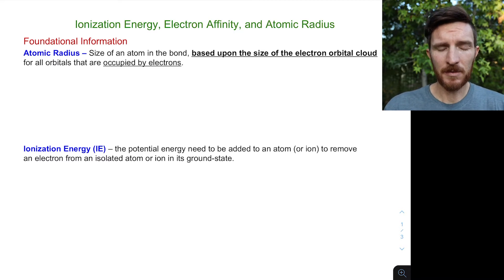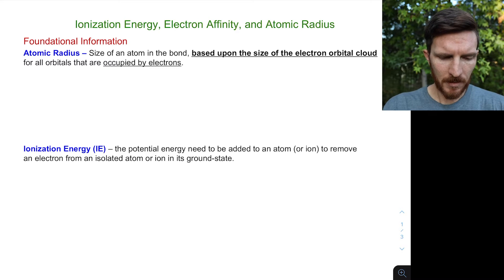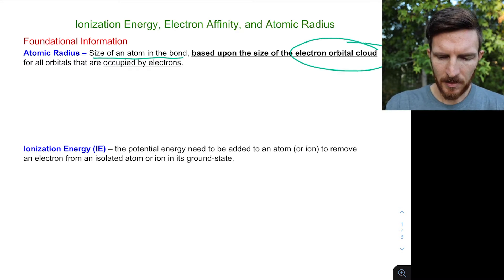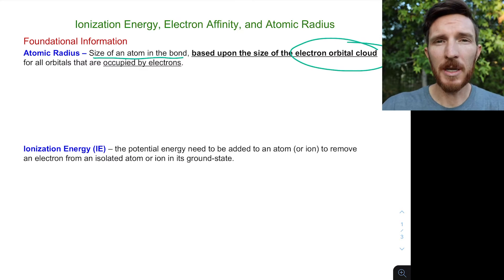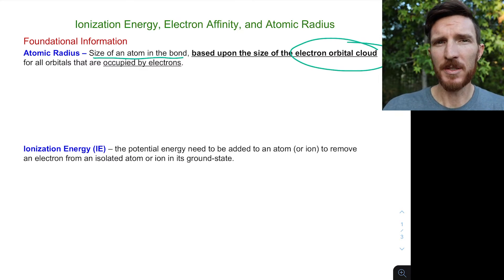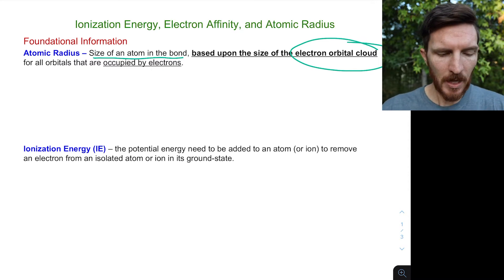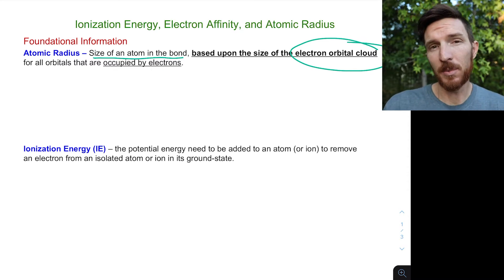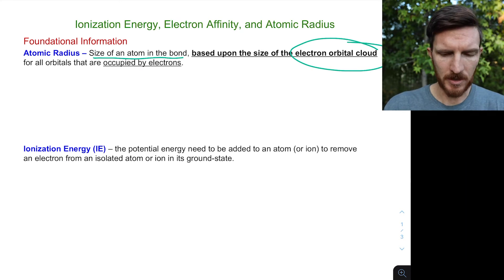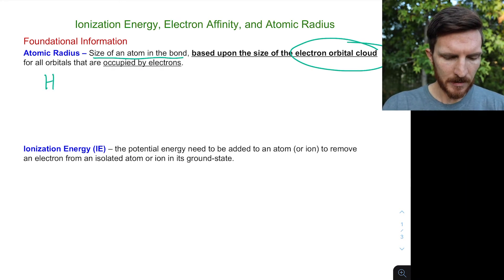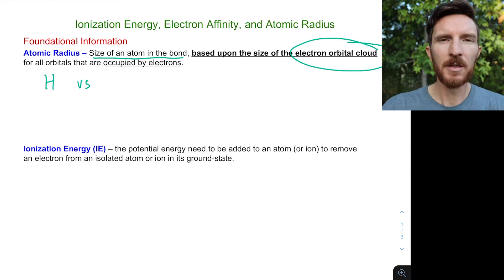Let's start by talking about atomic radius and how it corresponds to our electron cloud. When we talk about atomic radius, we're thinking of the size of an atom, and it's based upon where our electrons are. How many electrons we have influences the size, where those electrons are occupied, as well as the interaction between the protons in our nucleus and our electrons.